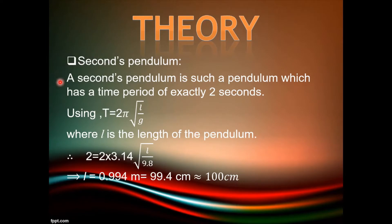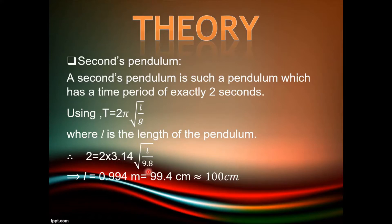Seconds pendulum: A seconds pendulum is such a pendulum which has a time period exactly of 2 seconds. So by using the formula T = 2π√(L/G), we can calculate the effective length of the seconds pendulum. Putting the value of time period as 2 seconds, π as 3.14, and acceleration due to gravity as 9.8, the calculated value of L, that is the effective length of the seconds pendulum on the surface of the earth, we will get approximately 100 centimeter.